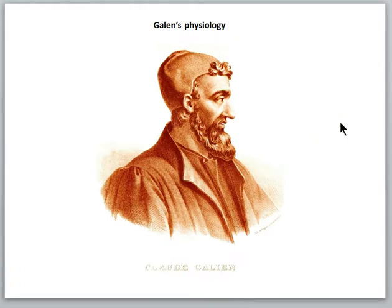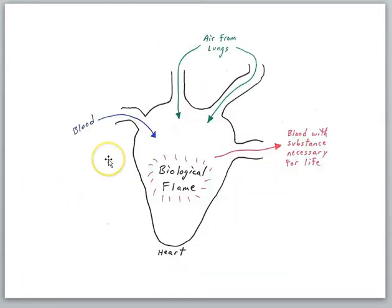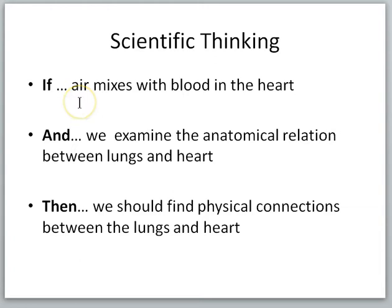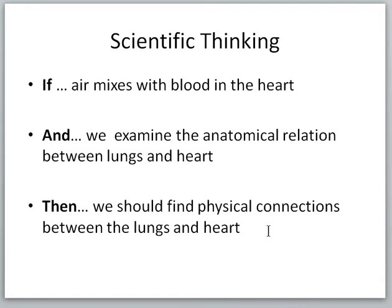Later thinkers, like the Roman physician Galen, added to Aristotle's theory. Galen's ideas provided the framework for most biological thought until the birth of the modern scientific era in the 16th century. For Galen, the fire in the heart was producing important changes in the blood. Air from the lungs mixed with blood in the heart, and the biological heat transformed the mixture into a substance necessary for life. Galen's hypothesis does make specific predictions — for example, if air mixes with blood in the heart, we should find physical connections between the lungs and the heart. As it turns out, there are vessels connecting the heart and the lungs, but Galen was wrong about what was in those vessels.